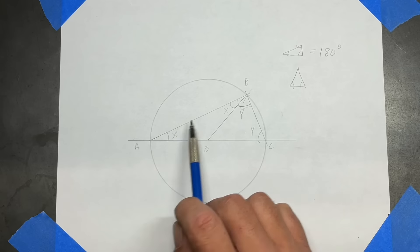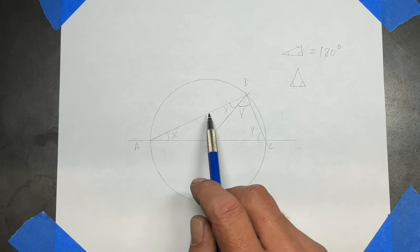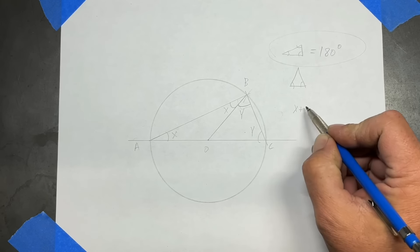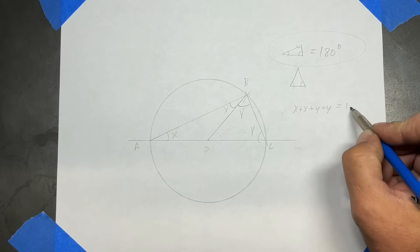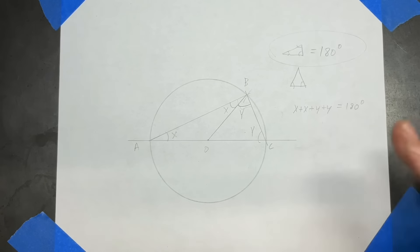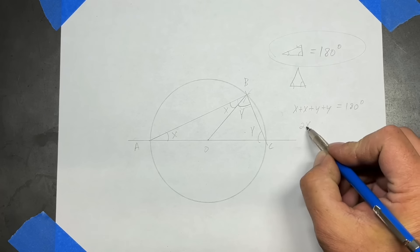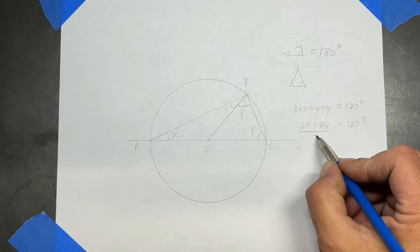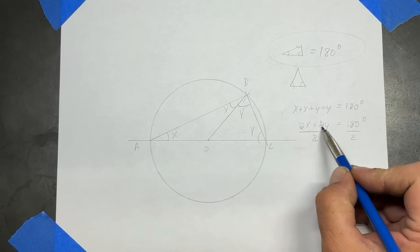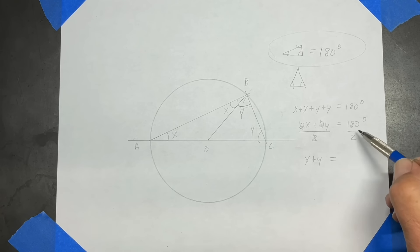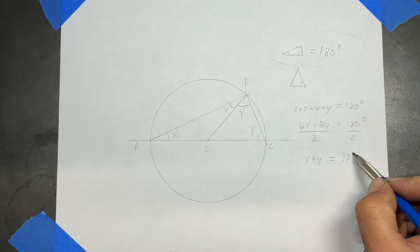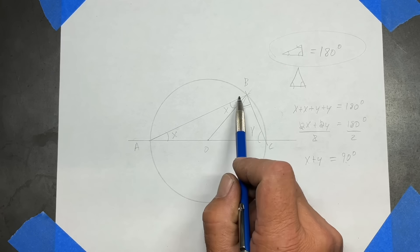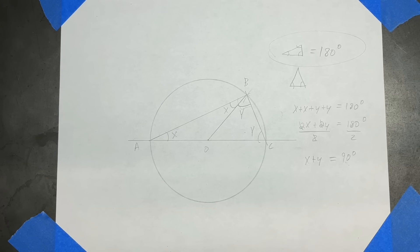Now we can write the equation. Looking at the larger triangle, all interior angles add up to 180 degrees. So X plus X plus Y plus Y equals 180 degrees. We can restate that as 2X plus 2Y equals 180 degrees. Dividing each side by 2, the 2s cancel, leaving X plus Y equals 90 degrees. X and Y make up angle B, so we now know that angle B is 90 degrees. That is how you prove Thales' theorem.